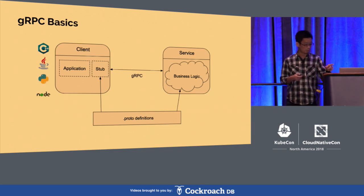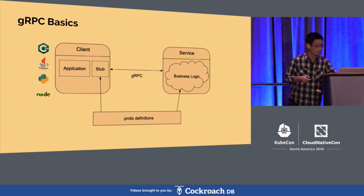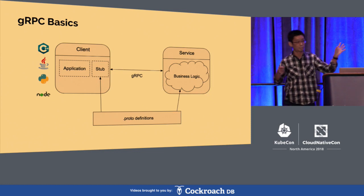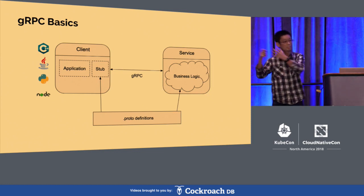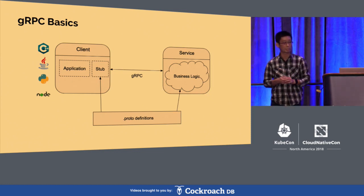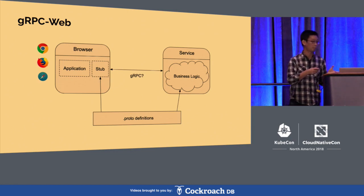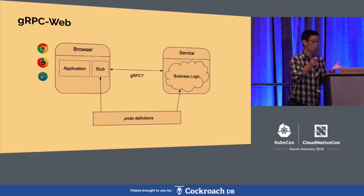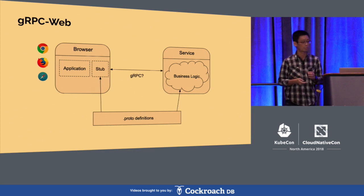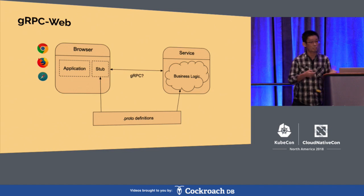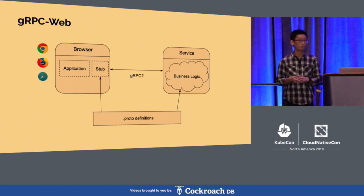So, focusing on the client now — you can write in C++, Java, Python, Node, or any of the 10 other languages I mentioned. And the same thing on the server side. Now, can we do the same thing in browsers, if we swap the client with browsers like Chrome, Safari, and Firefox? Can we talk gRPC with your services?